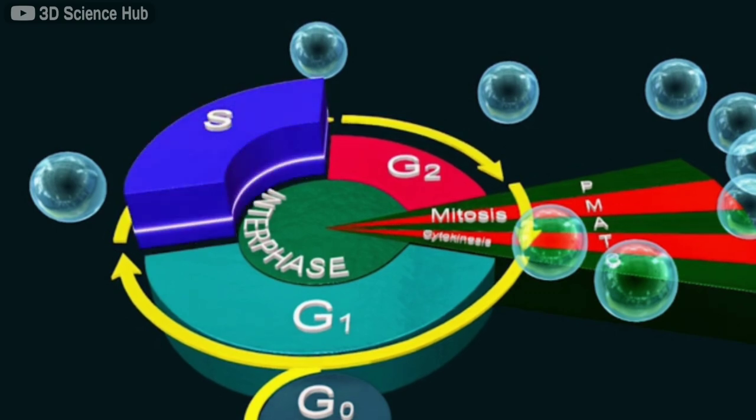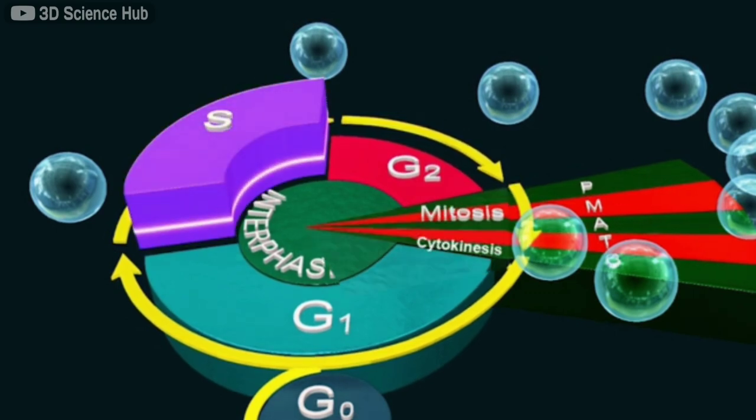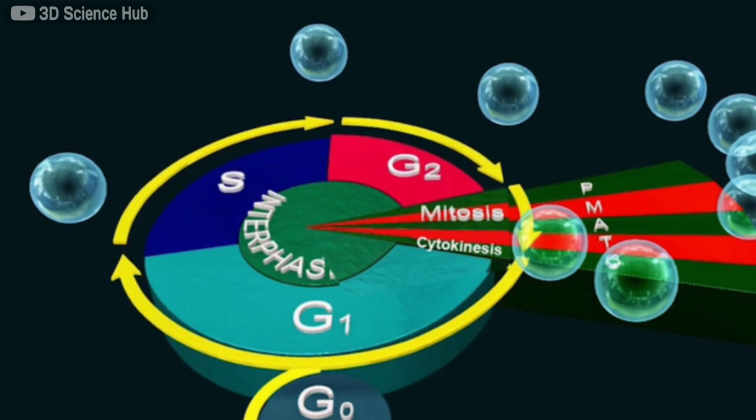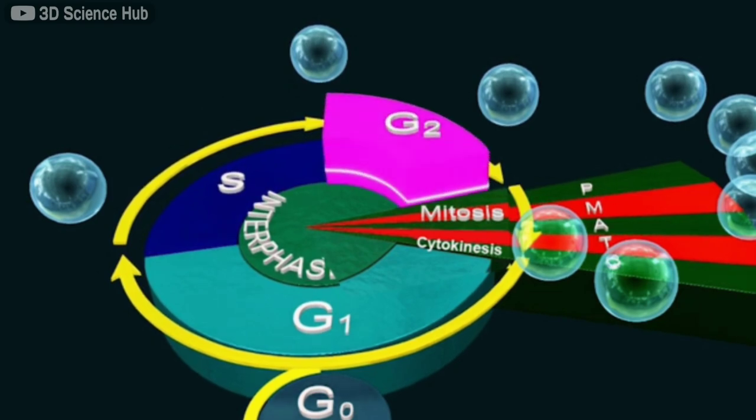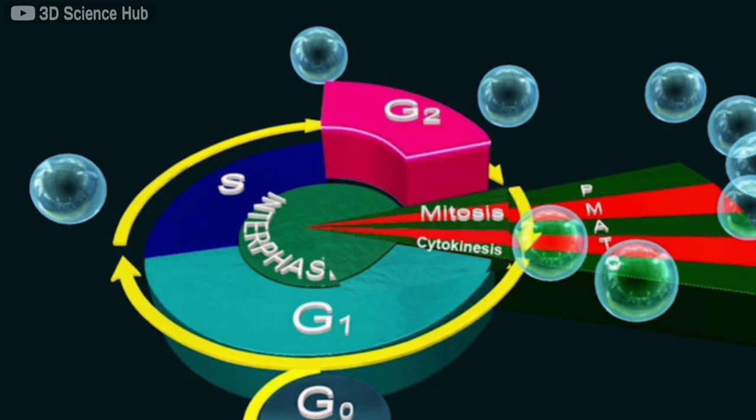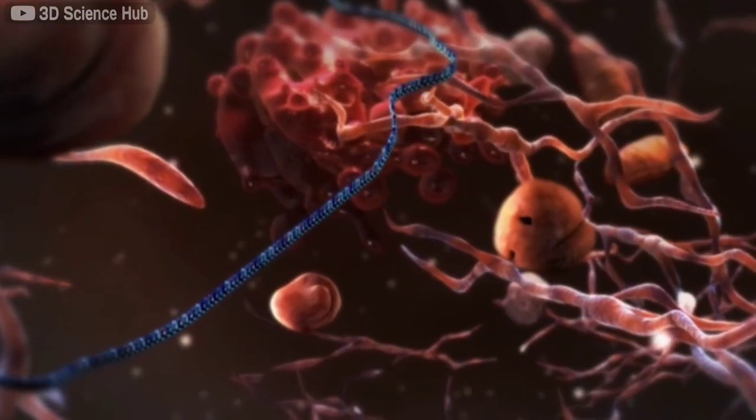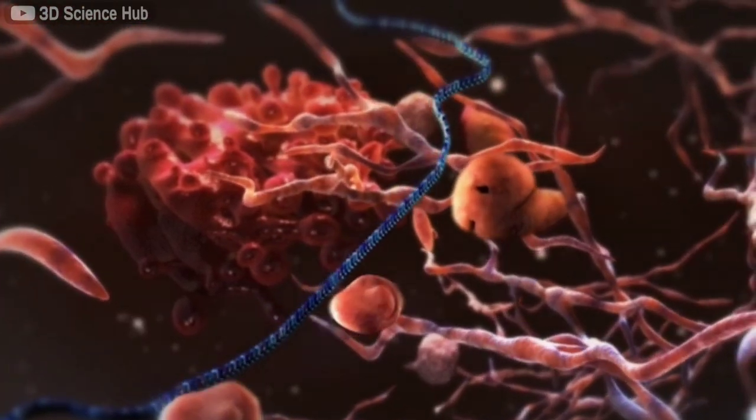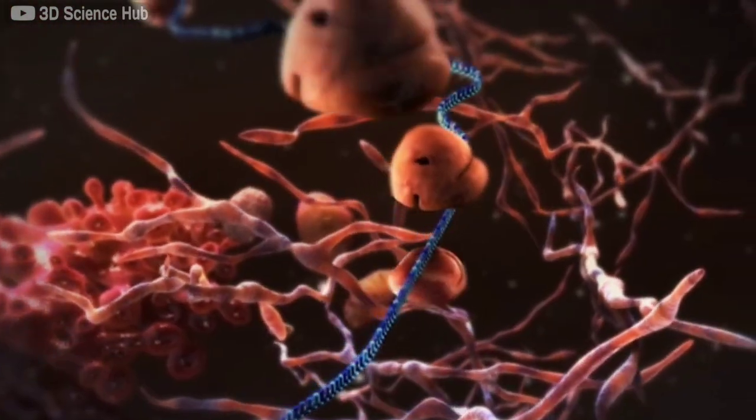The last phase of the interphase is called G2 or gap 2. This phase only takes from 12% to 22% of the cell cycle. This is a phase of rapid growth and protein synthesis.